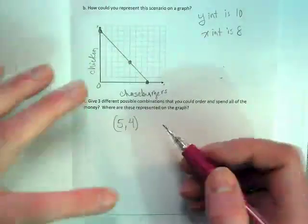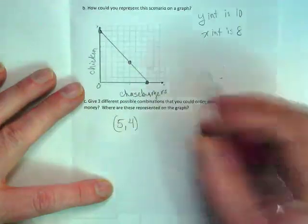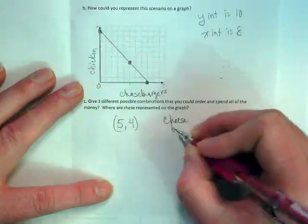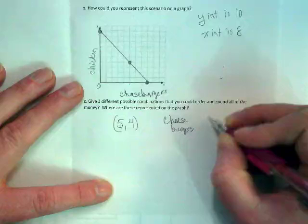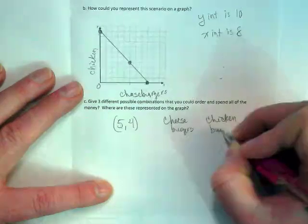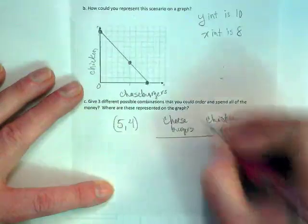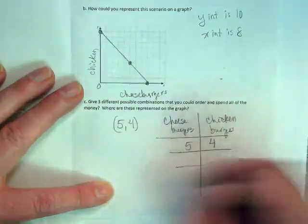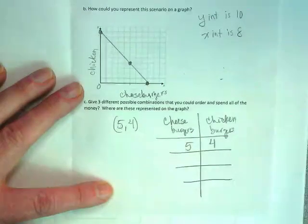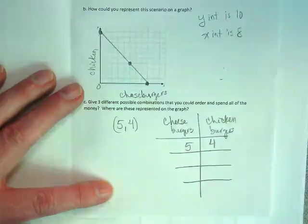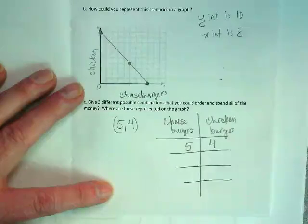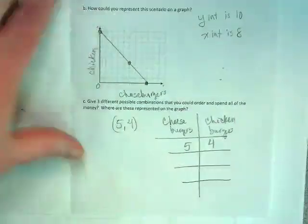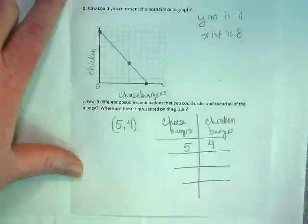Okay, there's a couple ways you could do this. You could write it out with words, you could make a table showing cheeseburgers and chicken burgers, and you could put those points in to show how many of each you'd be getting and using all forty dollars. And I'm assuming that they don't charge tax in this world, right. Okay, does that help clarify this page? Good.